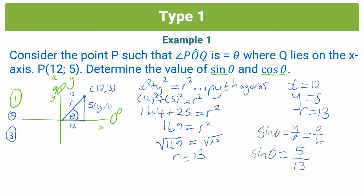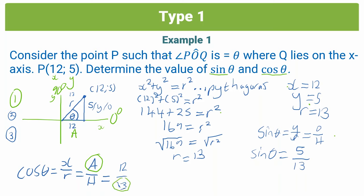For cos theta, we know the definition is x over r, or adjacent over hypotenuse. x is 12 and r is 13, so cos theta = 12/13. Looking at the triangle, 12 is adjacent to theta and 13 is the hypotenuse r. You can use either x/r or a/h — in coordinate type questions I prefer x/r, because it makes more sense since we've found x, y, and r.